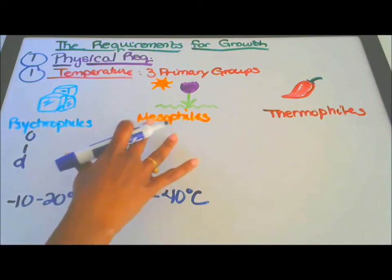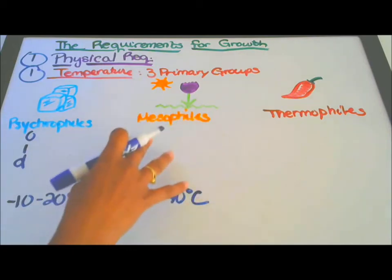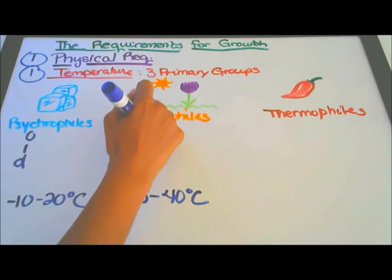And how I would remember mesophiles is taking the O and taking the M and turning it into moderate, a moderate temperature.